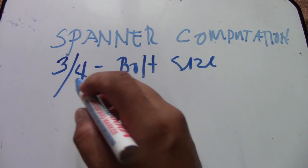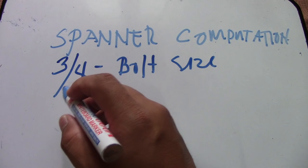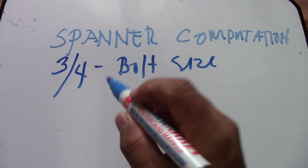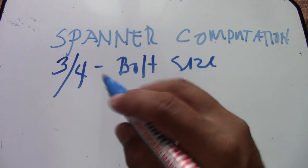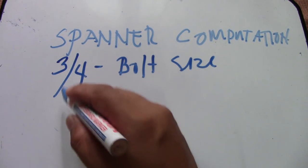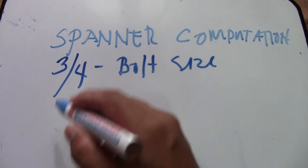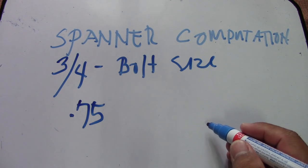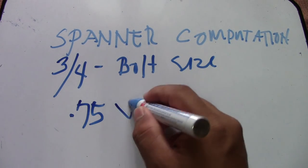Before you compute this three-fourths, you must make it a decimal point for easy computation. So three-fourths: three divided by four equals 0.75.